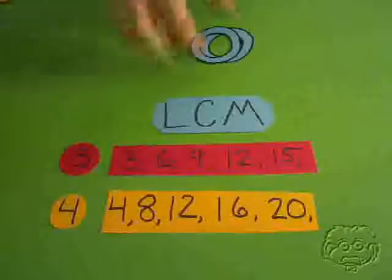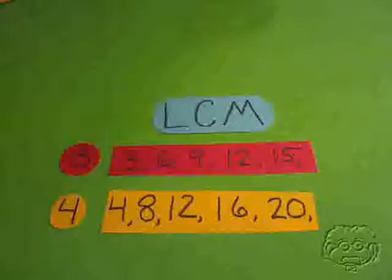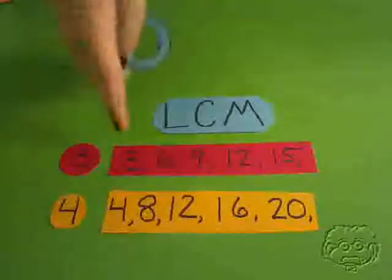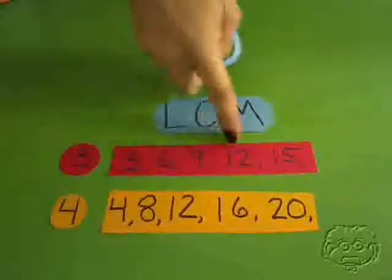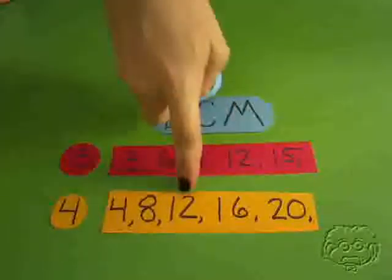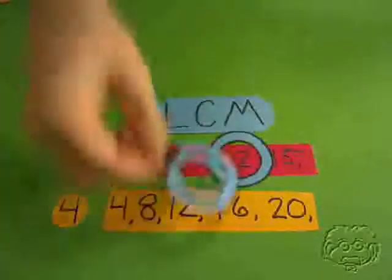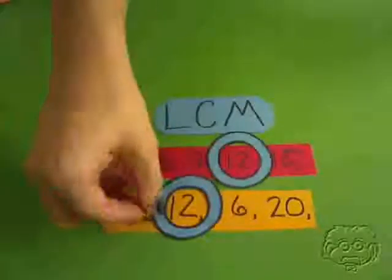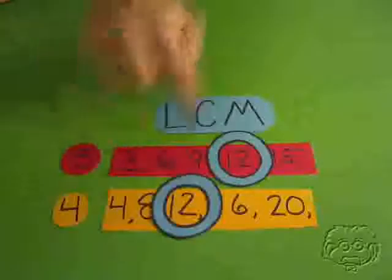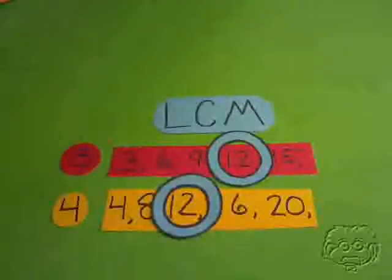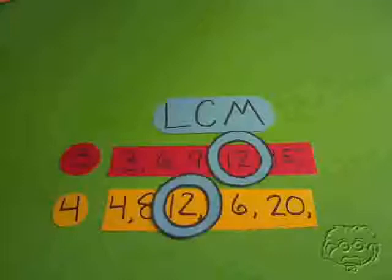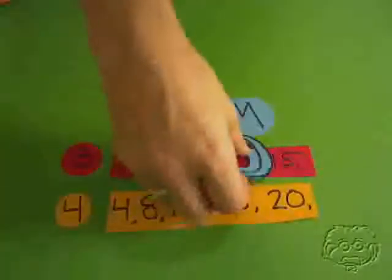So we want to find the smallest number that's on both lists. Going through 3, 6, 9 — there's a 12 on the list for 4 as well. That's the first number they have in common; 4, 8, 3, 6, and 9 are all different. So 12 would be the LCM, or least common multiple, for 3 and 4.